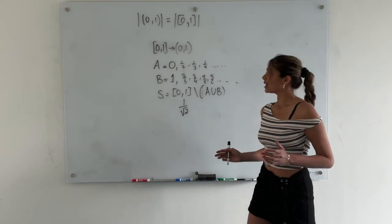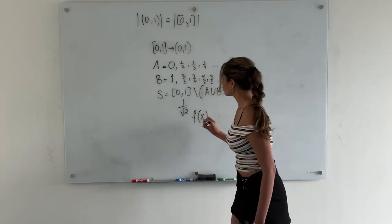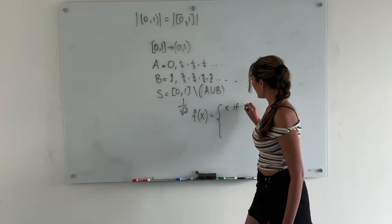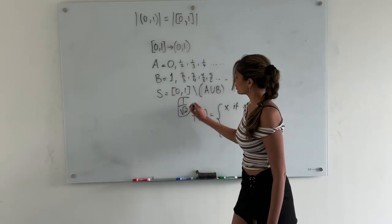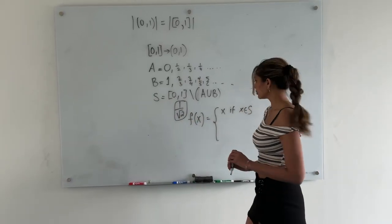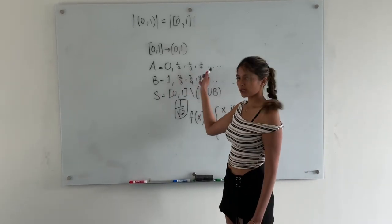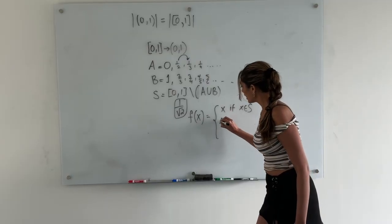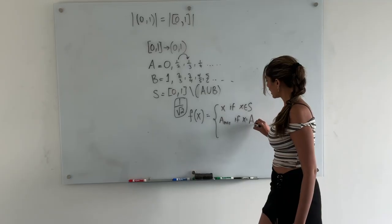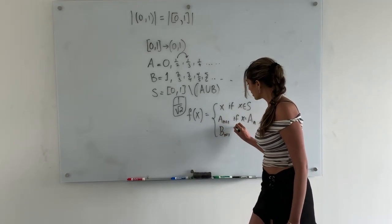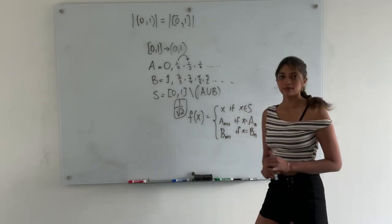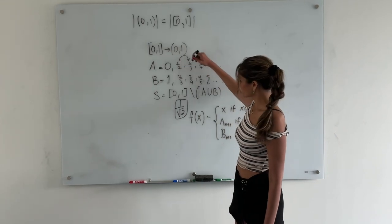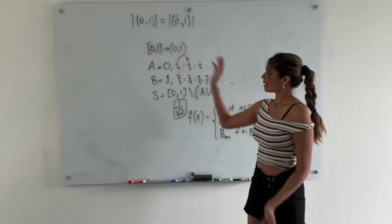Now, to define the bijection — this is the last step in our proof. Define f(x) to give x if x belongs to the set s. So if we input 1 over root 2, then f will simply return 1 over root 2. Then, if we catch one of the numbers in sequence a — suppose we get 1/2 — then we go to the next place in a, which is 1/3. We write that as a_{n+1} if x equals a_n. Similarly with b: b_{n+1} if x equals b_n. So if x is 0, f(x) returns 1/2. If x is 1/2, it returns 1/3. Hence you can create a bijection which maps [0, 1] closed to (0, 1) open.